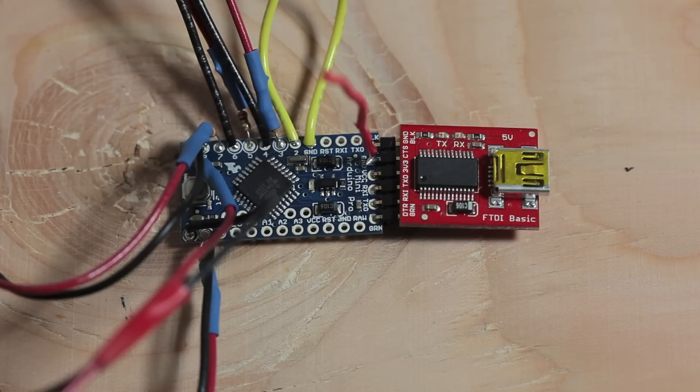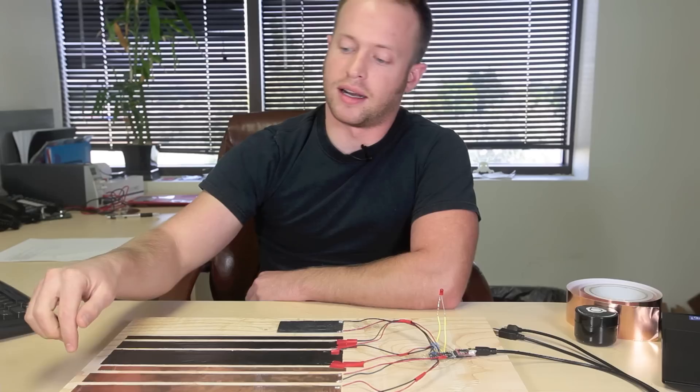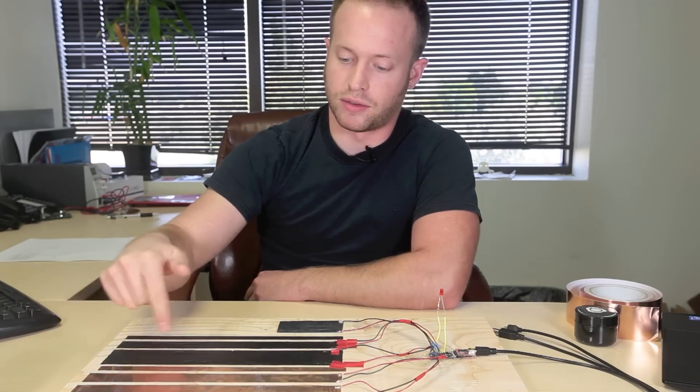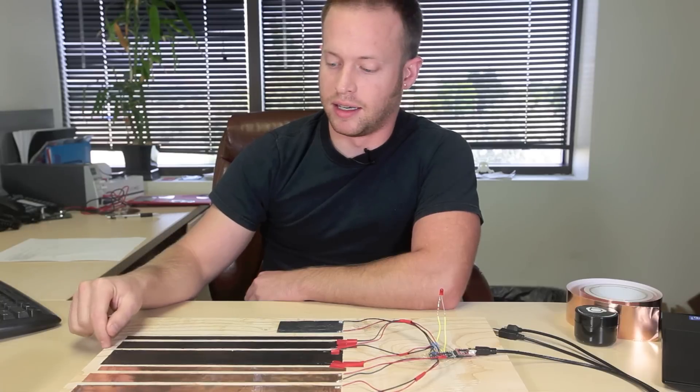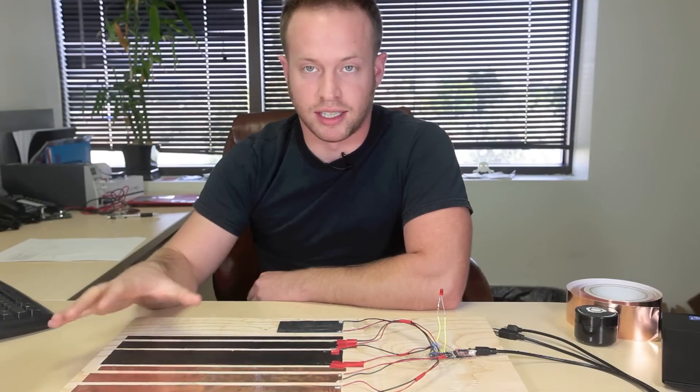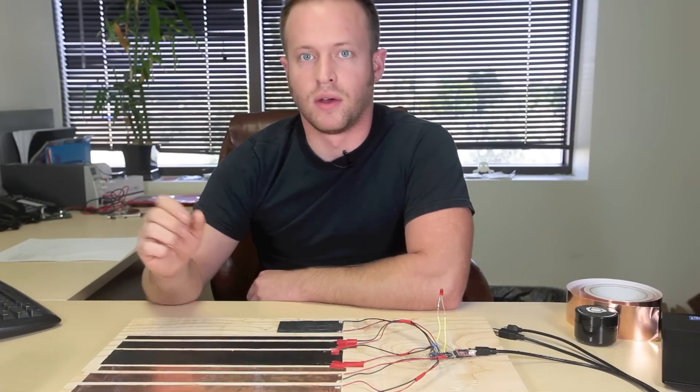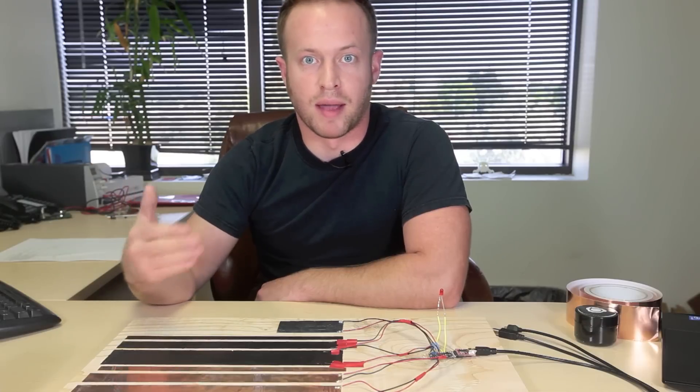What I've got here is an Arduino Pro Mini with an FTDI basic for programming and power connected to this board with three different conductive materials: copper tape cut into three widths, conductive ink painted on in three widths, and a hunk of sheet metal. By touching these, I change the capacitance of the element with my body. It's detecting my body's capacitance.